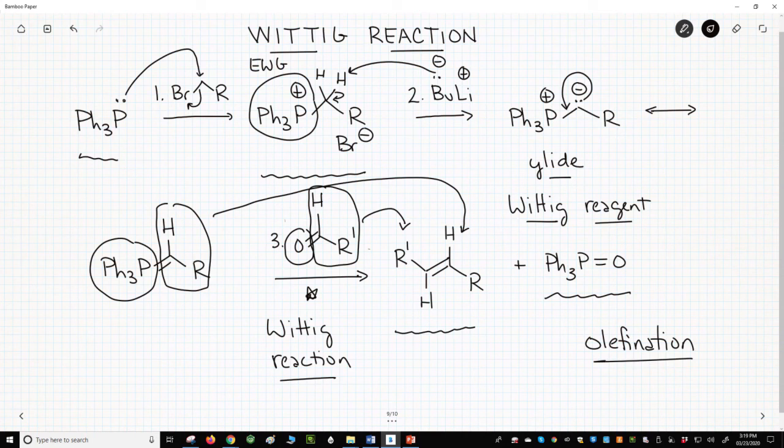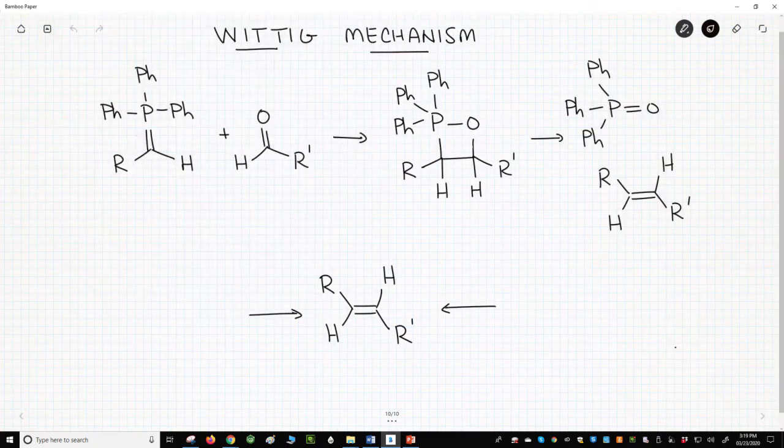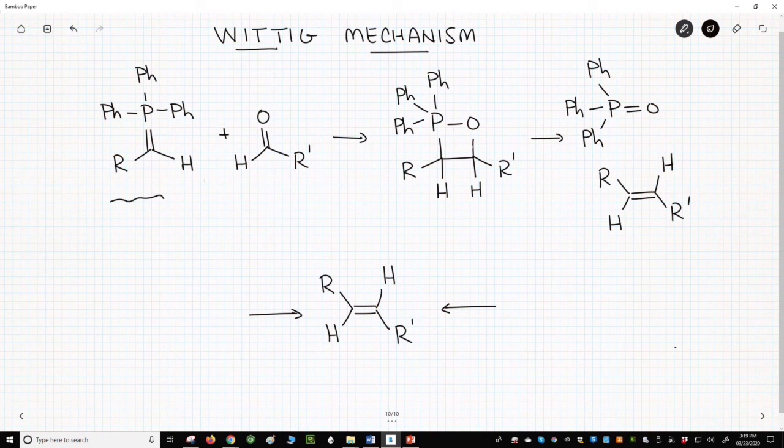Let's see some more mechanistic details. At the top of the screen is the Wittig reagent and an aldehyde from the previous slide. In the reaction, the two pi bonds react to form a four-membered ring intermediate called